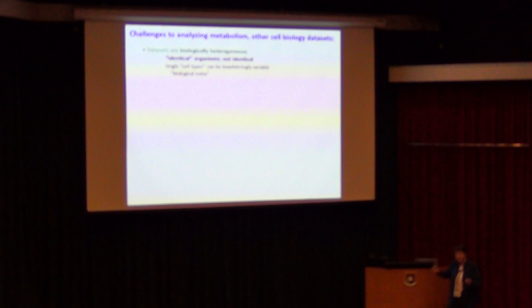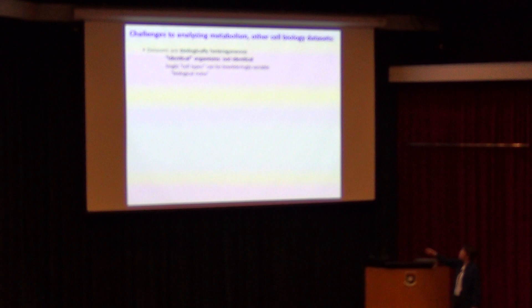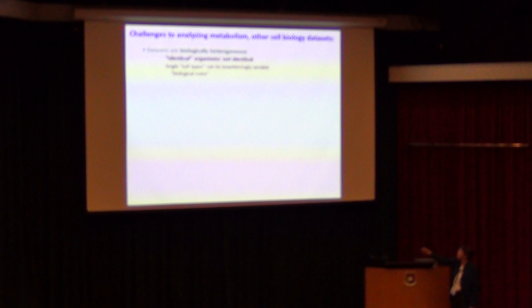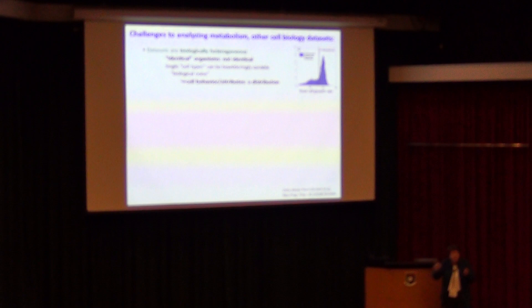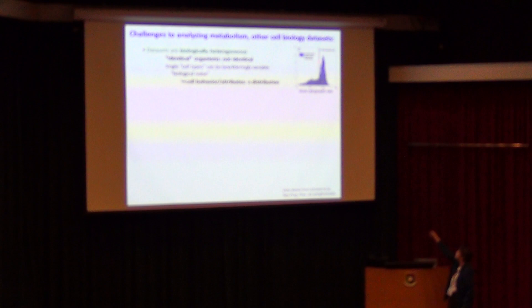There are some challenges to analyzing metabolism and cell biological data sets more broadly. One is that data sets are biologically very heterogeneous — identical organisms are not identical, and single cell types can be bewilderingly variable. This is known as biological noise, but a better way to look at it is that cell behavior is naturally a distribution. For example, yeast cell growth rates in a clonal culture show substantial variability. Biologists like to report one number, but that single number is just the wrong way to look at these things.